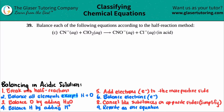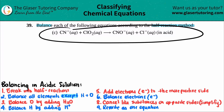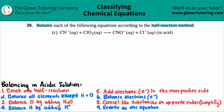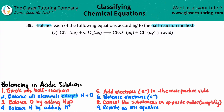Number 39. Balance each of the following equations according to the half-reaction method, letter C. We have to balance CN minus plus ClO₂, which will yield CNO minus plus Cl minus, and we have to balance this in acidic conditions.